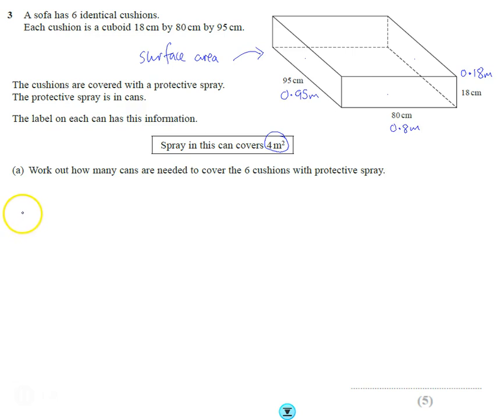The first bit I'm going to work out is two times, because there's two of them, and I'm going to do the front and the back: 0.18 times 0.8, which is this front face and also the back face. That's why we've got two of them. The front face and the back face, that comes out as 0.288 meters squared.